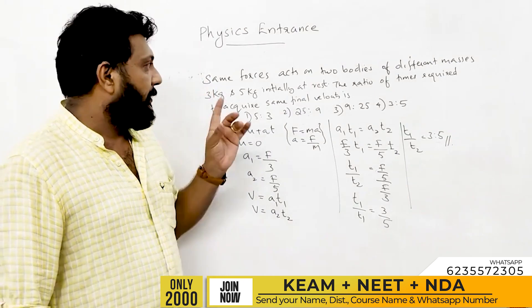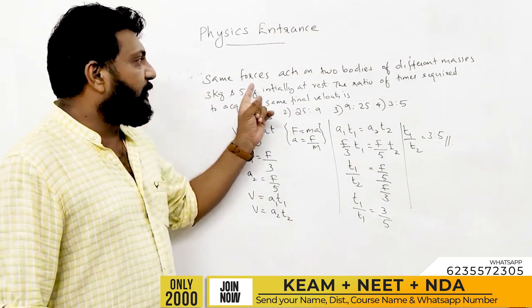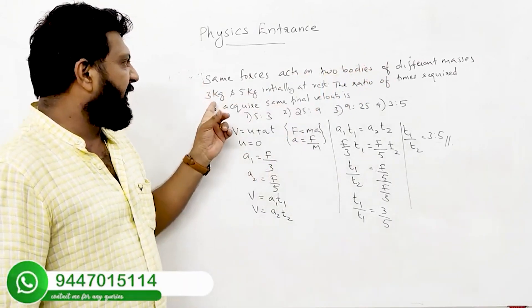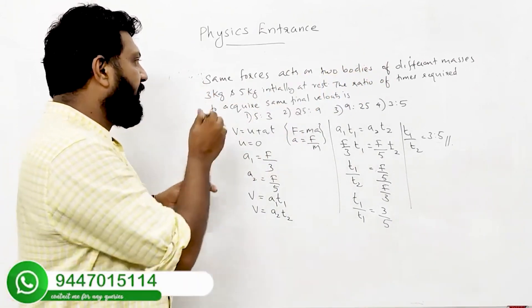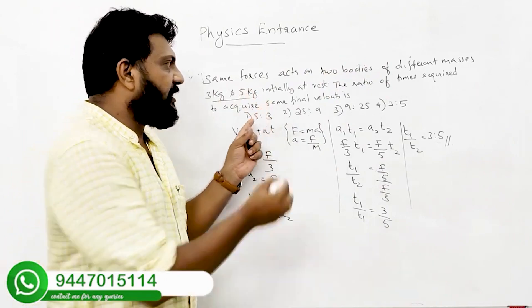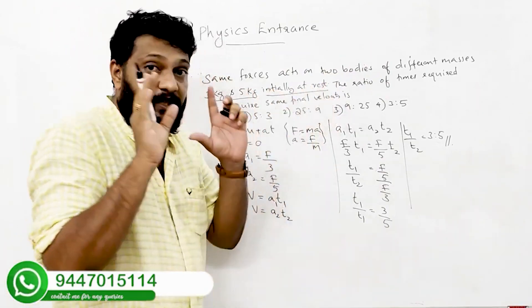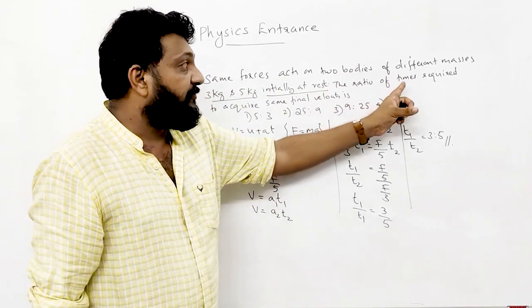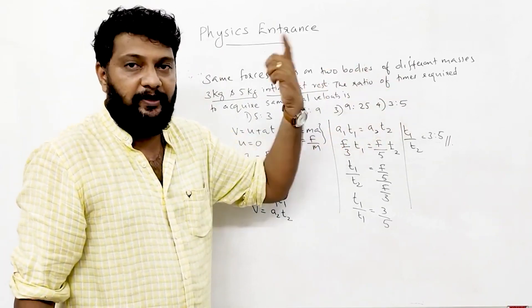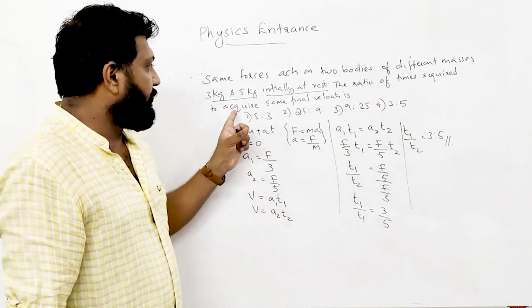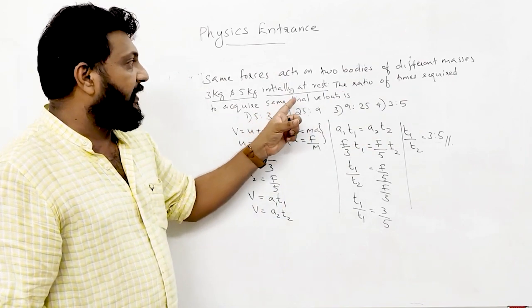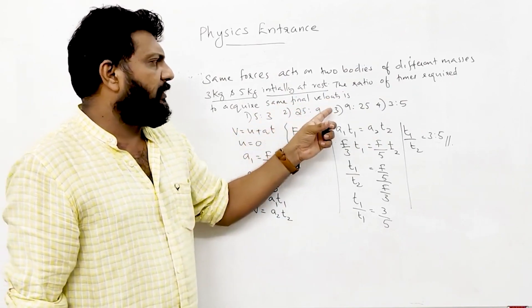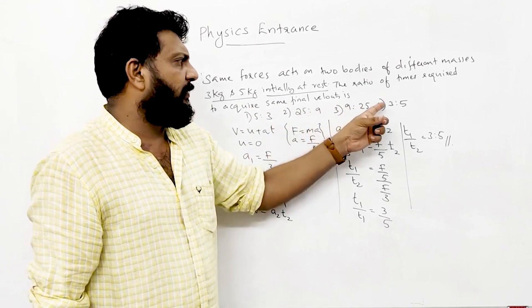Same forces act on two bodies of different masses 3 kg and 5 kg. Initial velocity is zero — that is the key keyword, u = 0. The ratio of times T1 by T2 required to acquire the same final velocity. Options: 5:3, 25:9, 9:25, 3:5.